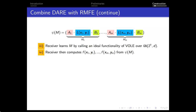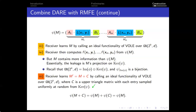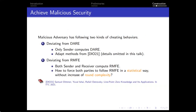As the matrix M equals A times L(x, y) times B, we have that psi is essentially equivalent to RmD over Z_{2^k}. By calling the ideal functionality of vole over the Galois ring, the receiver learns M_n and can output the function evaluation. However, M contains more information than just M_n. Essentially, the leakage is M_n's projection on the kernel of psi. This is due to the fact that psi projects onto the image of phi without information about the kernel component. Our solution is that the sender must multiply by a random upper-triangular matrix C, where each entry of C is an element from the kernel of psi.